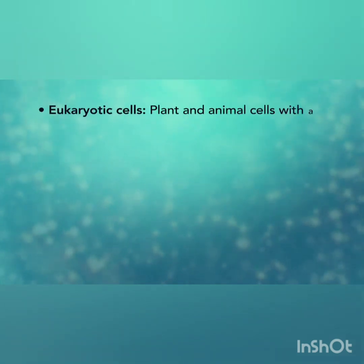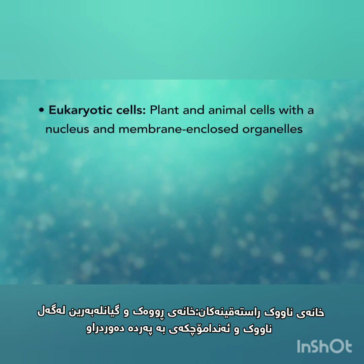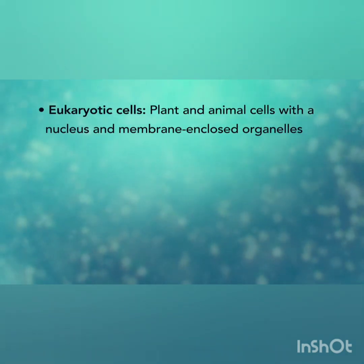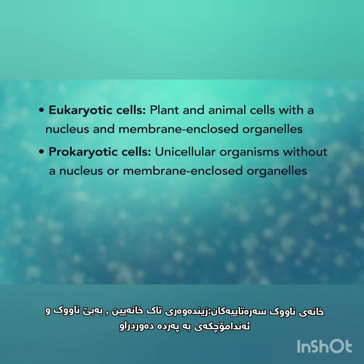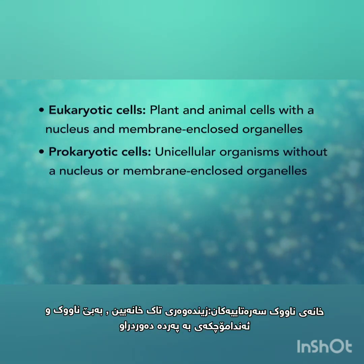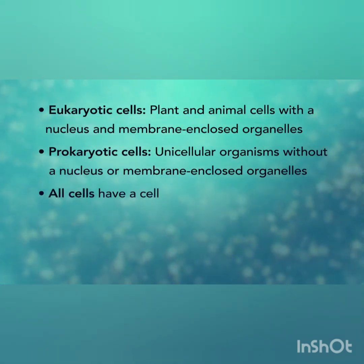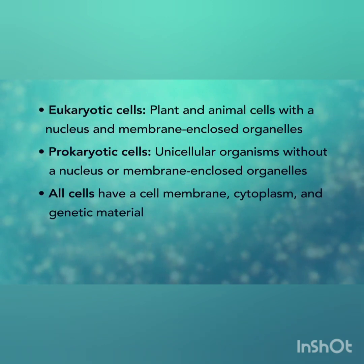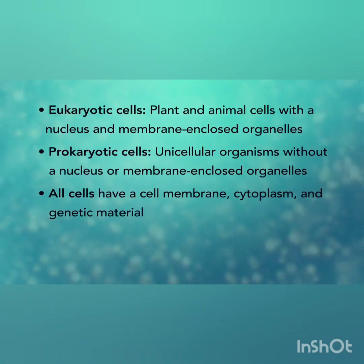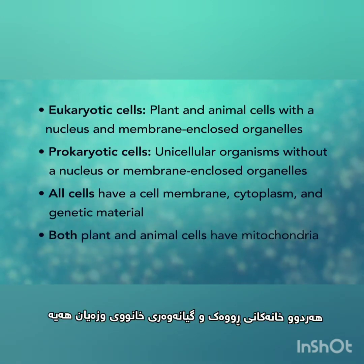In summary, eukaryotic cells are plant and animal cells with a nucleus and membrane-enclosed organelles, while prokaryotic cells are unicellular organisms without these things. All cells have a cell membrane, cytoplasm, and genetic material. And even though only plant cells have chloroplasts, both plant and animal cells have mitochondria.